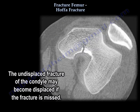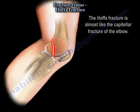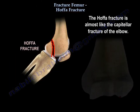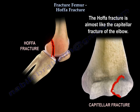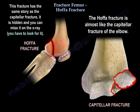The undisplaced fracture of the condyle may become displaced if the fracture is missed. The Hoffa Fracture is almost like the capitellar fracture of the elbow — the same story. It's hidden, you can miss it on the x-ray, and you have to look for it.